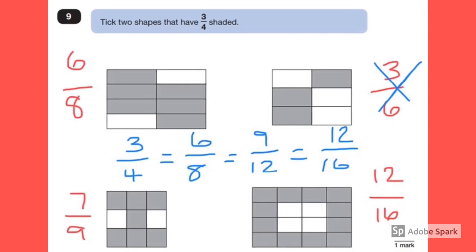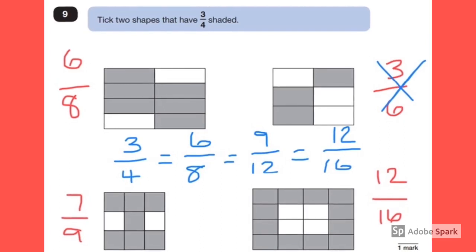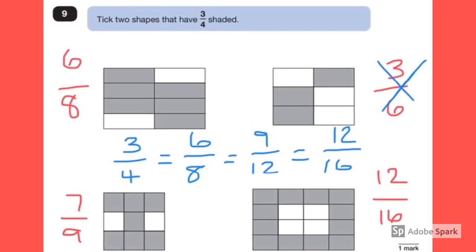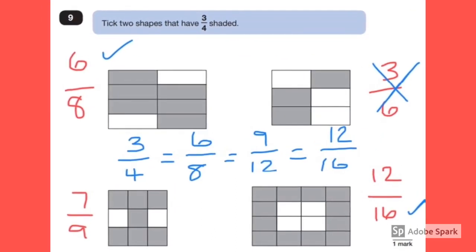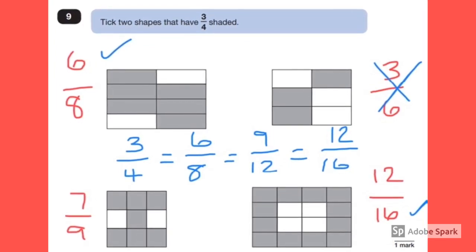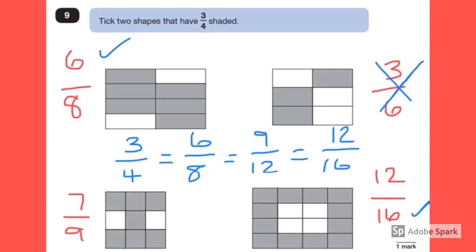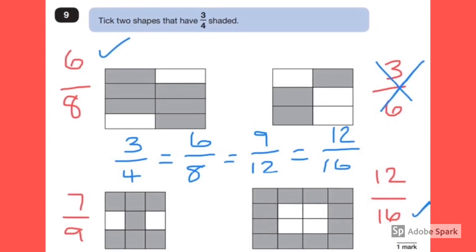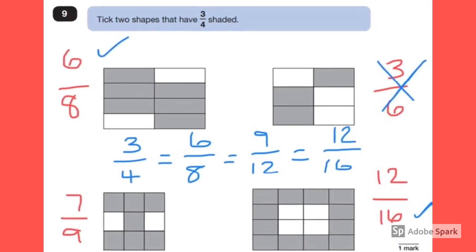I would then write out all of my equivalents of three quarters: three quarters, six eighths, nine twelfths, and twelve sixteenths. We can now see that we have got two fractions that are both equivalent to three quarters — six eighths and twelve sixteenths. These two are our answer.